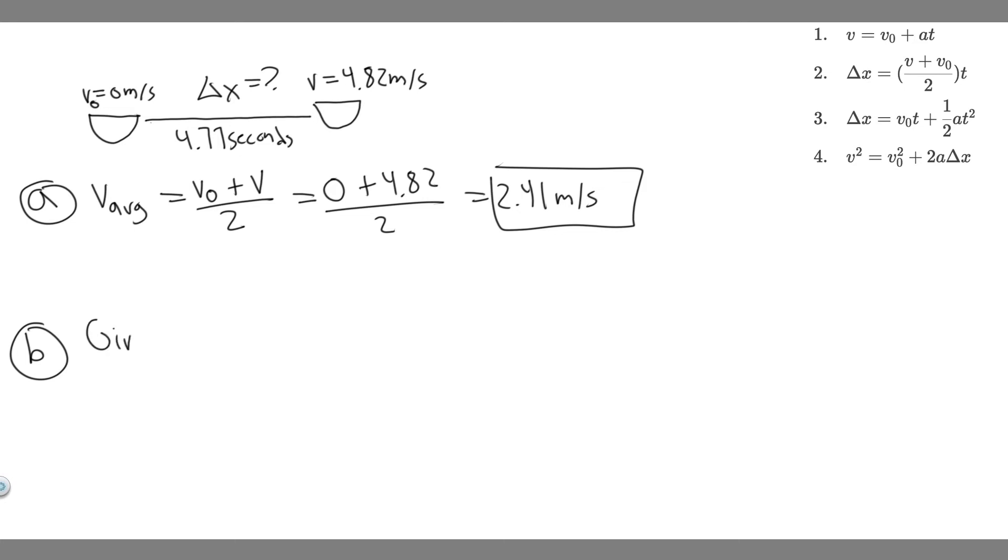The way I like to approach these is just by writing down the variables we're given. We're given the initial velocity, V sub zero, which is zero meters per second. We're given the final velocity, V - you can write V final if you'd like - which is 4.82 meters per second. And we're also given how long this takes, it's going to take 4.77 seconds for this to happen. And what are we trying to solve? We're trying to find how far it travels, or delta X.